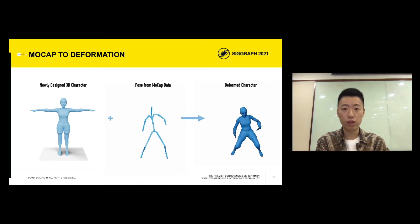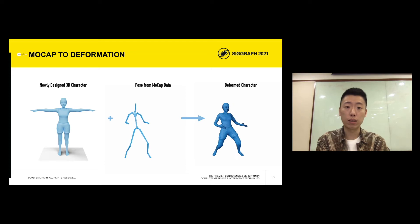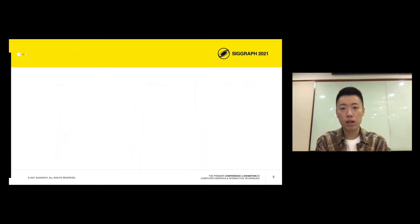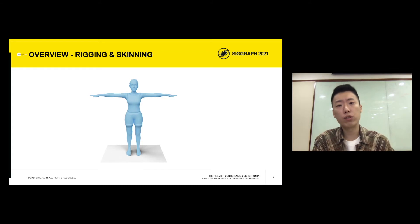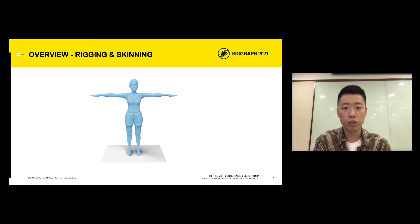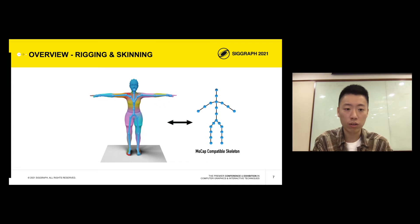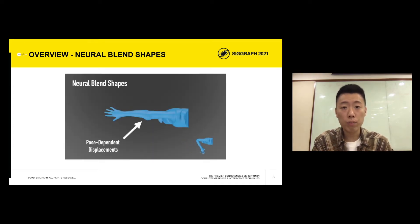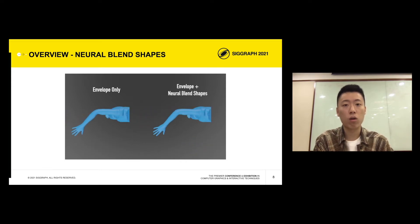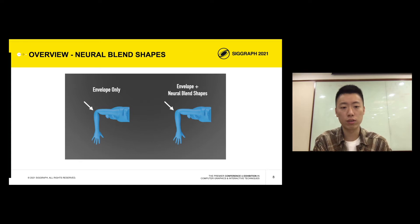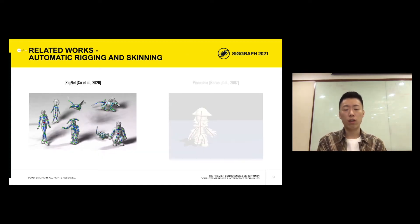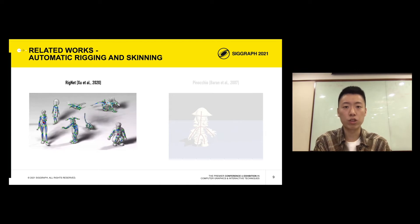In this work, we present a framework that makes the mocap to deformation process simple and efficient. Given a newly designed character with arbitrary mesh connectivity, our network generates a practical rig with the prescribed skeletal structure and high-quality skinning weights. Our network also computes a set of residual pose-dependent displacements that improve the deformation quality, called neural blend shapes. These refinements are crucial to high-quality deformation in joint regions. Recently, RigNet demonstrates impressive performance on shapes with varying skeletal hierarchies like bipeds and quadrupeds.